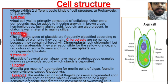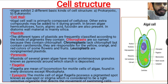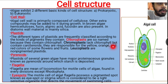The different types of plastids are classified according to the kinds of pigments they contain. Chloroplasts are so named because they contain chlorophyll, which is responsible for photosynthesis — they absorb a particular wavelength of sunlight for photosynthesis. Chromoplasts lack chlorophyll but contain carotenoids, responsible for yellow, orange, and red colors. Leucoplasts are non-pigmented plastids.